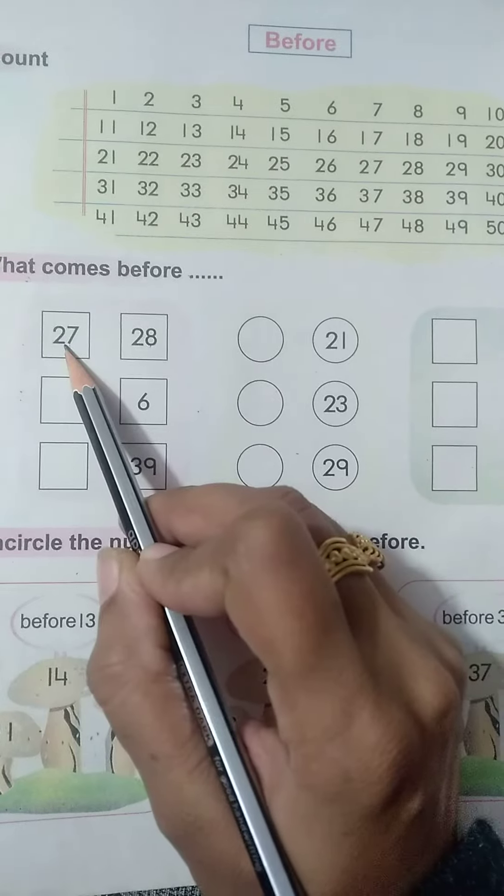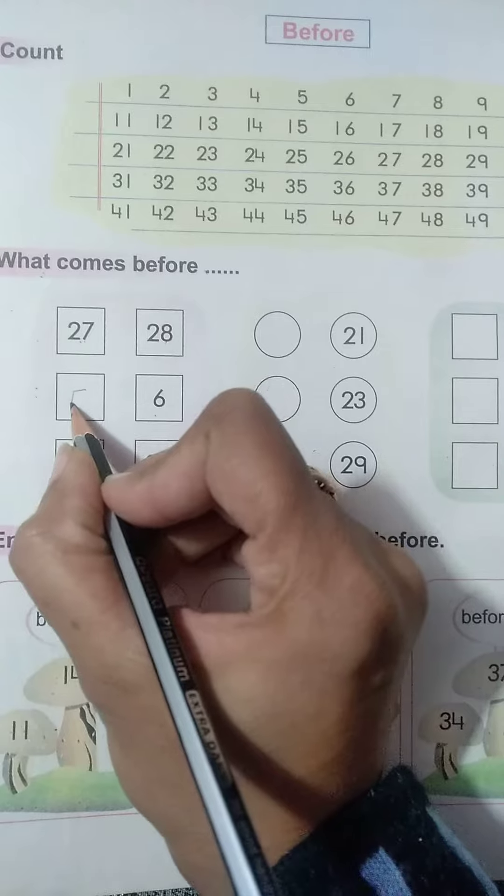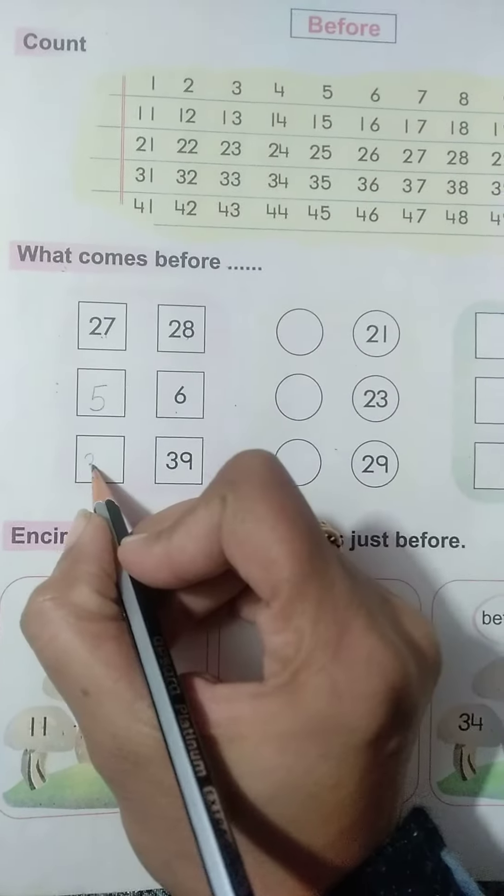Before 28 what will come? 27. Before 6 what will come? 5. So you will write here 5. Before 39 what will come? 38.